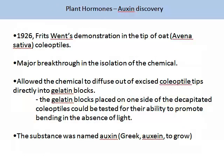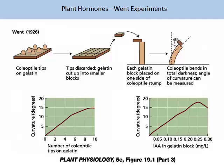It was experiments conducted by Fritz Went in 1926 on the tips of oat coleoptiles that went some way towards the discovery of auxin. He enabled a major breakthrough in the isolation of the chemical with his clever experimental design. He allowed the chemical to diffuse out of the excised coleoptile tips directly into gelatin blocks he had placed beneath. The gelatin blocks were placed on one side of decapitated coleoptiles and tested for their ability to promote bending in the absence of light. This substance we now know as auxin. The visual representation on the slide shows a summary of Went's experiments and the conclusions he was able to draw.